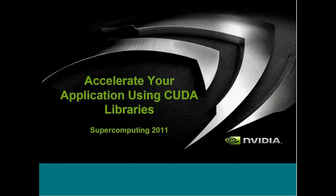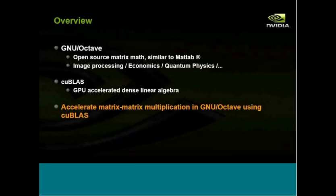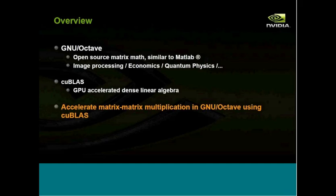This talk will discuss how to accelerate your application using CUDA libraries. We'll show you how easy it can be to accelerate a large existing code base using CUDA libraries. We will be using GNU Octave, a well-known and widely used application of about 350,000 lines, as an example of an existing code base.